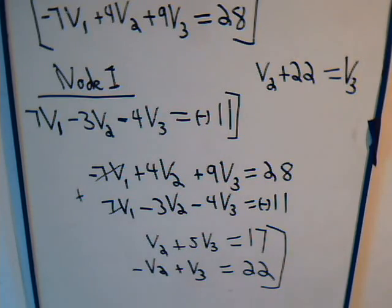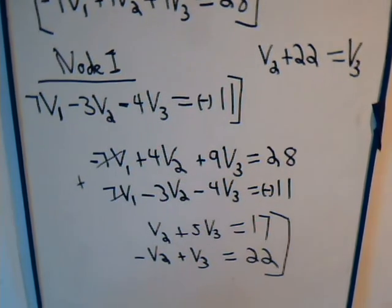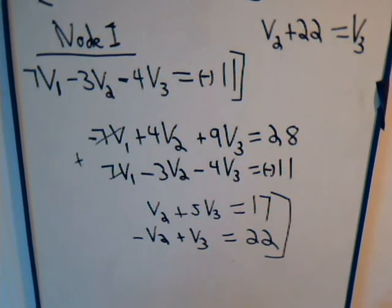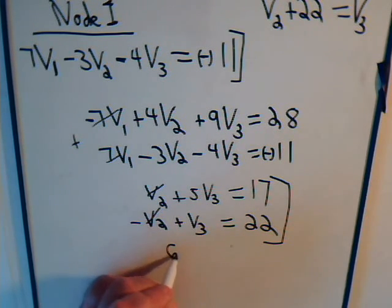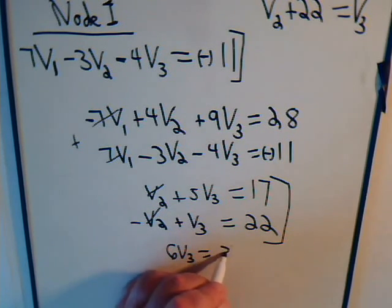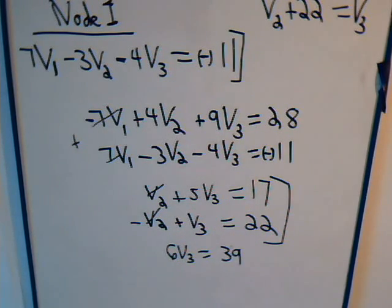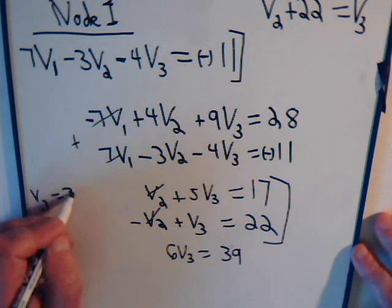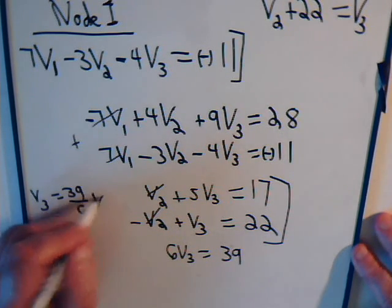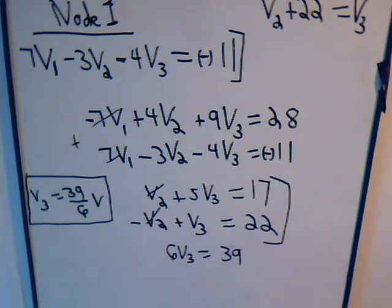Right here, we see if we add these two equations together, this is going to cancel and then here we will have 6V3 equals 39, so V3 equals 39 over 6 volts.